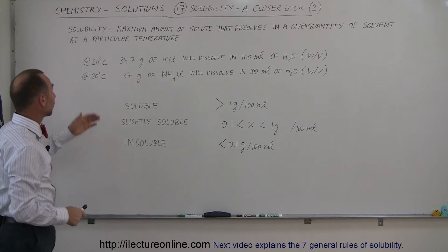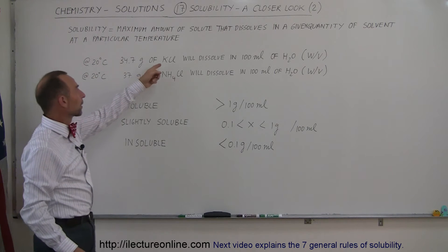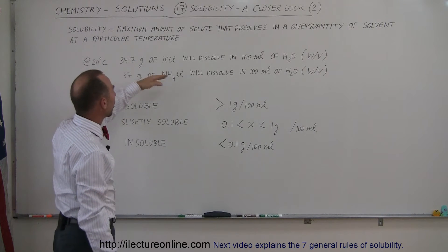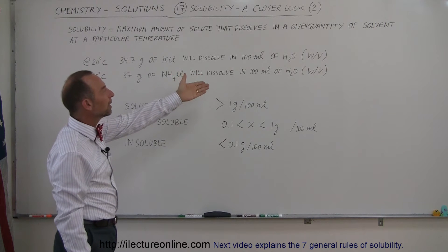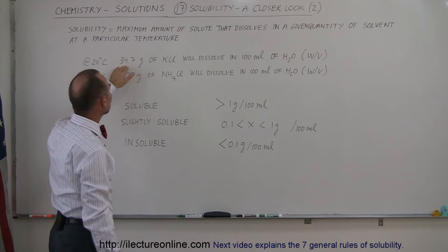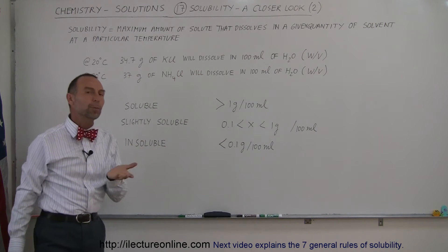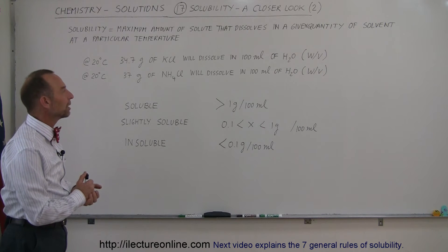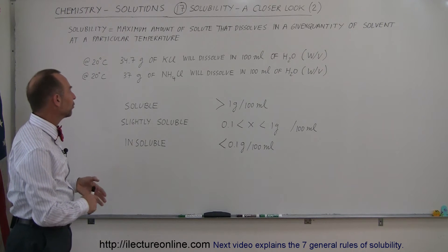For example, at 20 degrees centigrade, potassium chloride will dissolve in 100 milliliters of water to the extent that it will dissolve 34.7 grams in 100 milliliters of water.